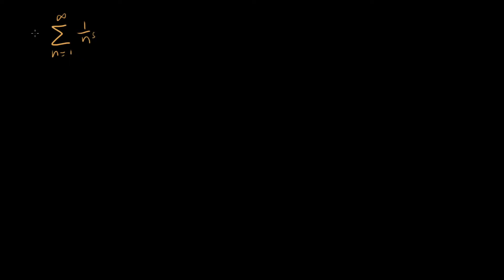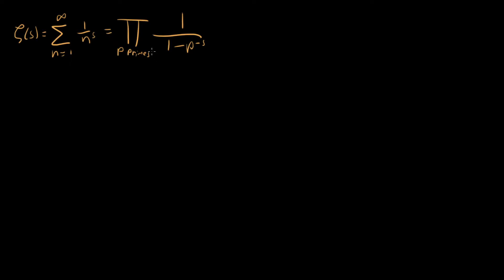What I want to do here is derive the Euler product formula for the Riemann zeta function. Recall our zeta function is the sum from 1 to infinity of 1 over n to the s — that's zeta of s. What I want to show is that you can rewrite this whole thing as a product over all primes of 1 minus p to the minus s. This is just super cool — you would never have guessed that the Riemann zeta function could be written as a product over all prime numbers, which is a surprising group of numbers to have a product over.